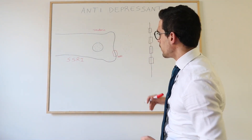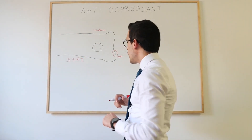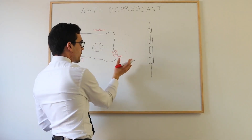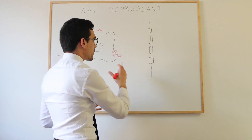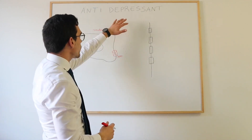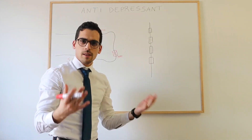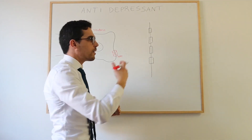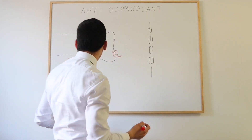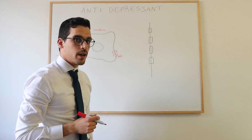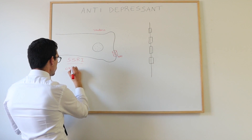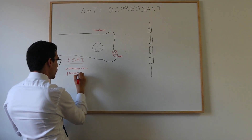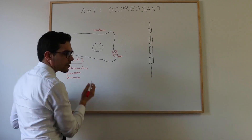Normally the SERT makes reuptake of serotonin back, preventing it from exerting its full effect. However, SSRIs block this transporter, blocking the reuptake of serotonin so it stays in the synapse and does its job. In patients with depression who lack serotonin, blocking this process means more serotonin is available to tackle depression. Examples of SSRIs include citalopram, escitalopram, fluoxetine, and sertraline.